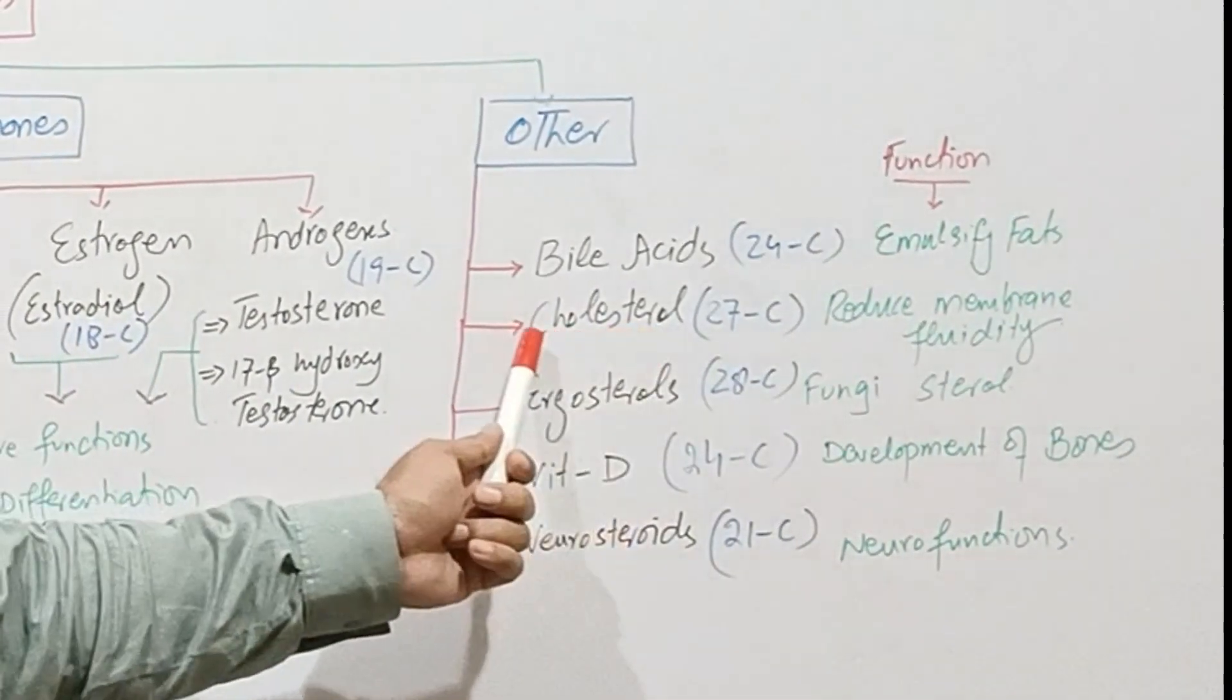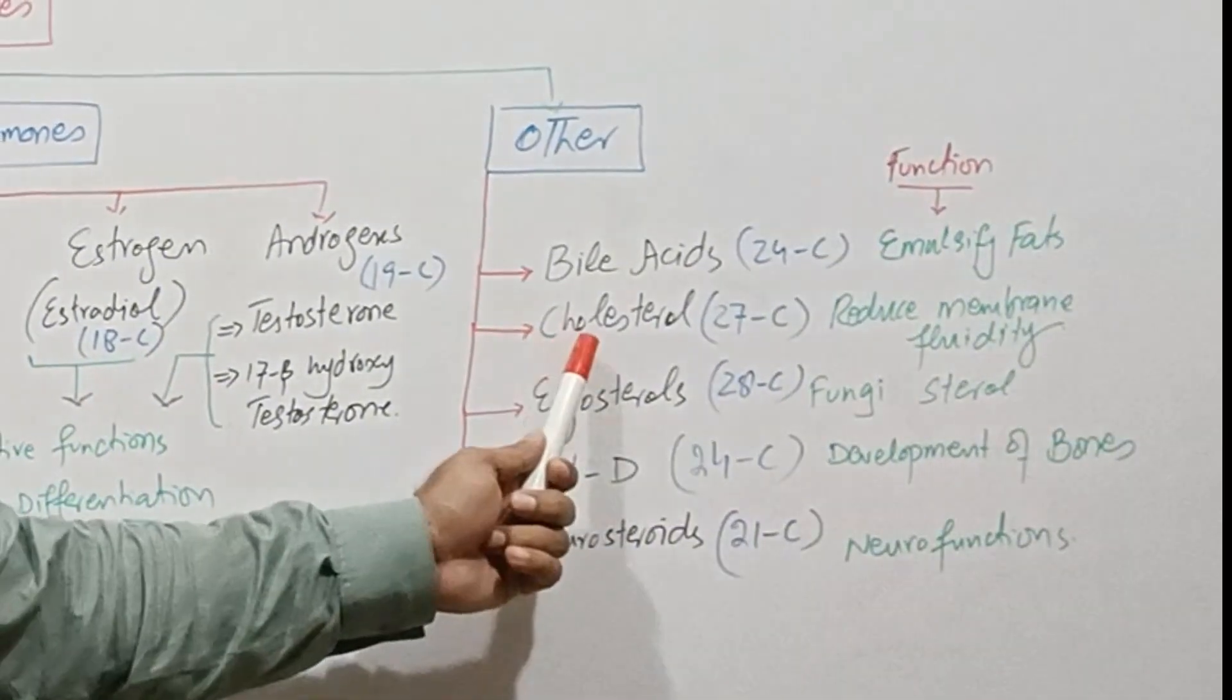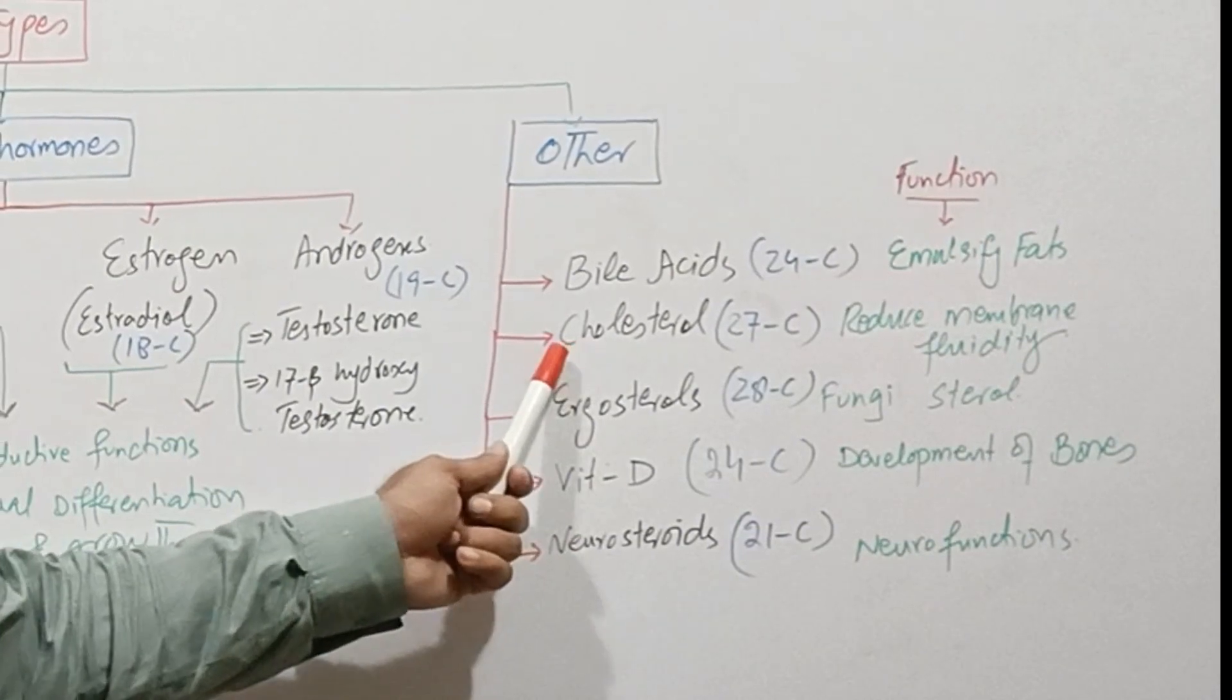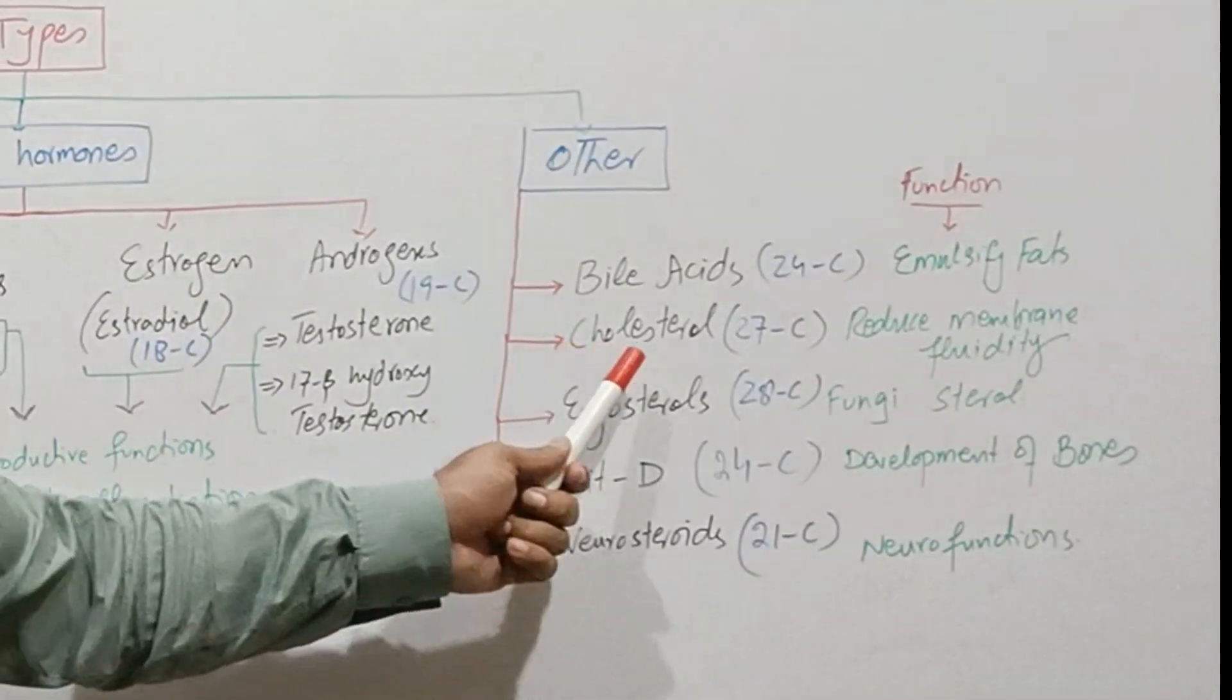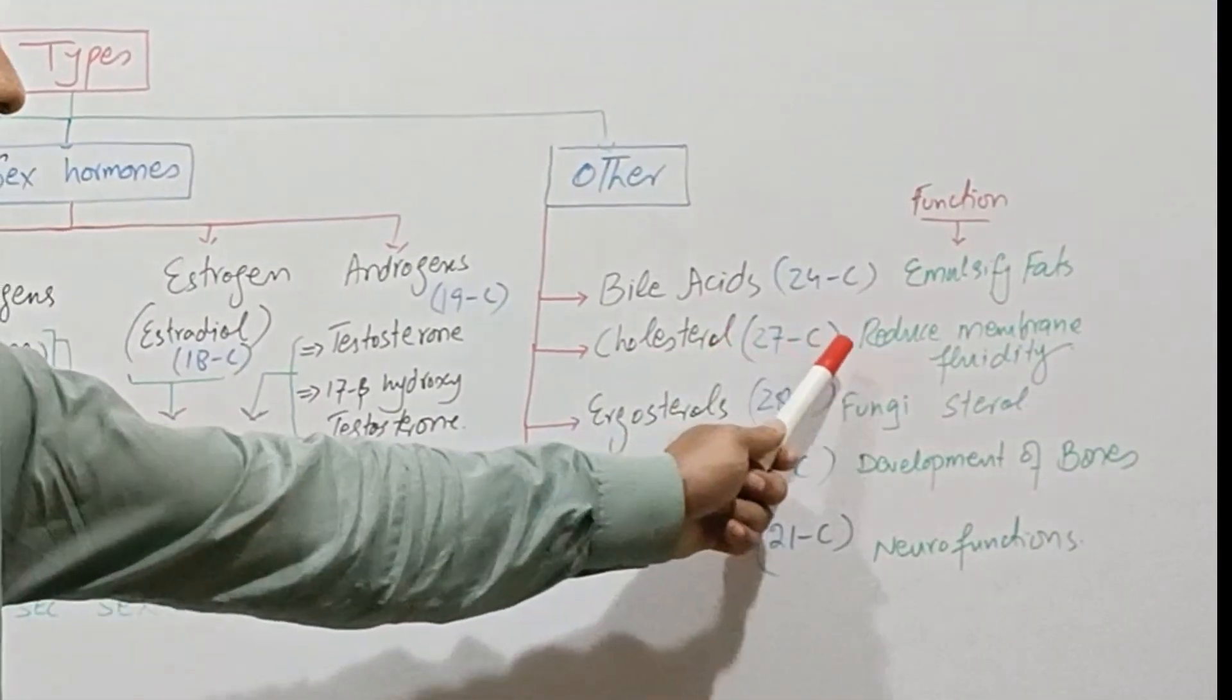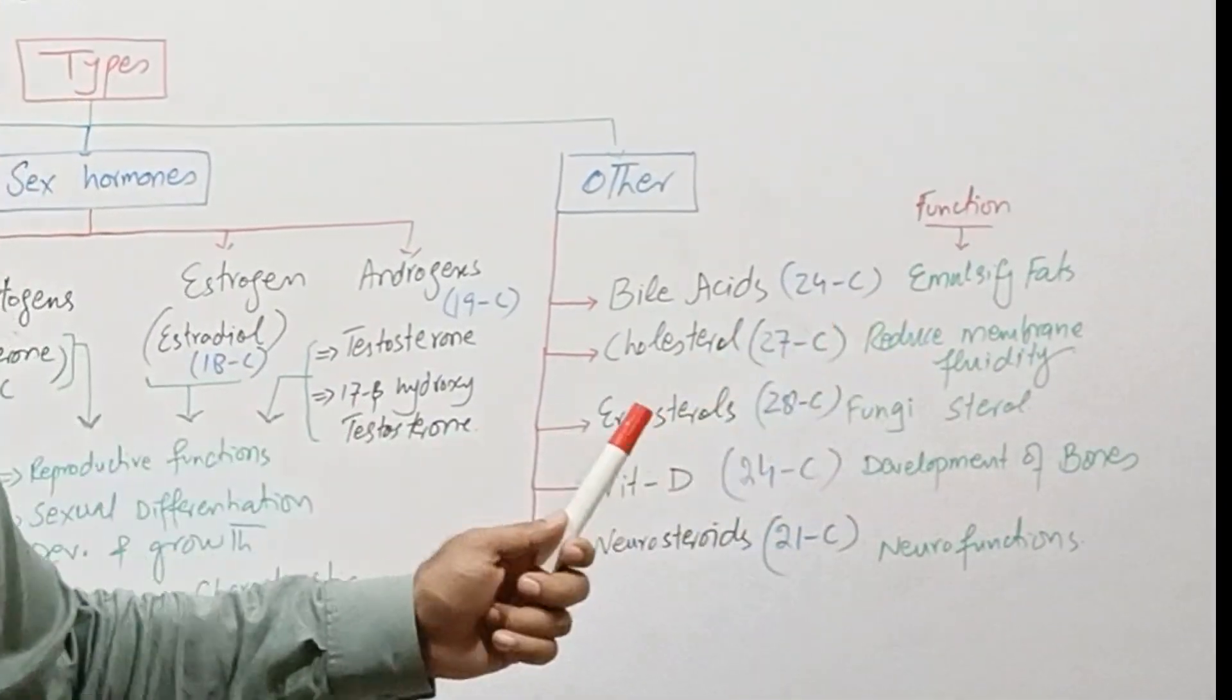Cholesterol is a very important steroid in the body as it acts as raw material for the synthesis of other steroids in the body. It is component of biological membranes in eukaryotes and it reduces membrane fluidity.